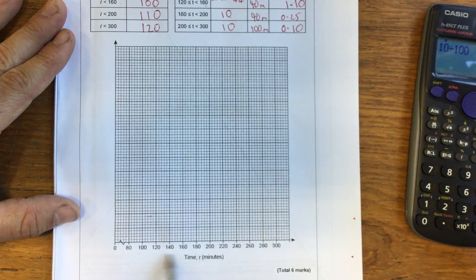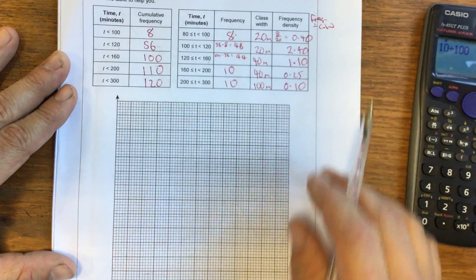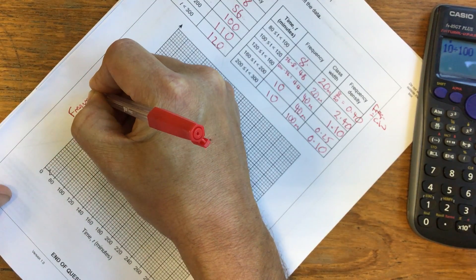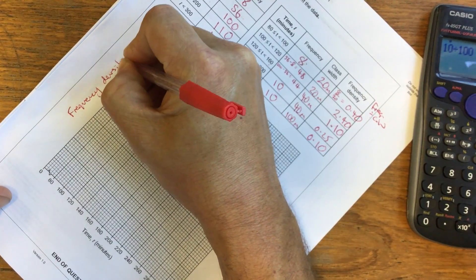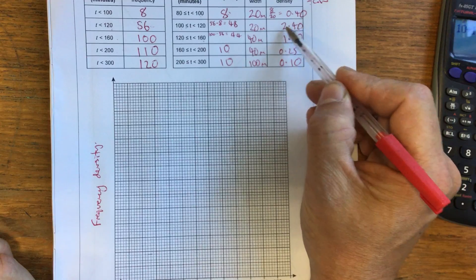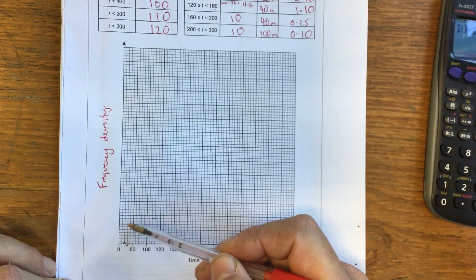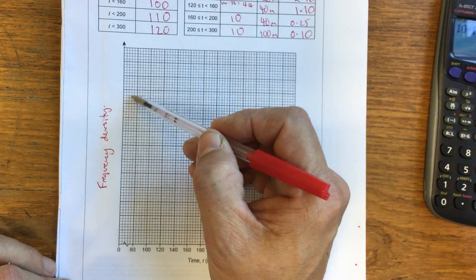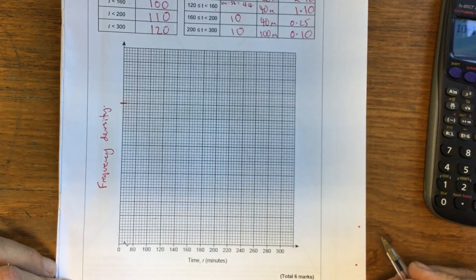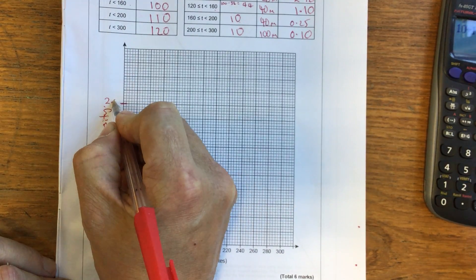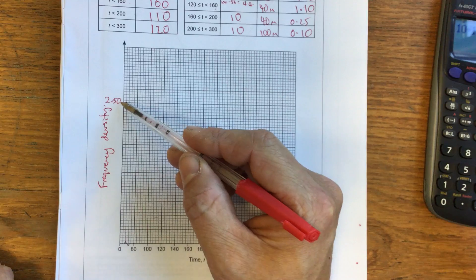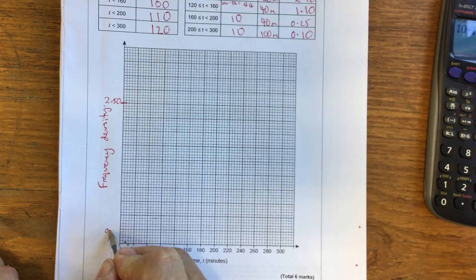So to draw my histogram, I'm going to have time on my horizontal axis. And I'm going to have frequency density on my vertical axis. Now the frequency density has to be from 0 up to the biggest number, which is 2.4. So let's see how many boxes we've got here. If we use 10 boxes and we say the 10th box is 2.50, I could then say, well, 2.50 divided by 10 would be 0.25. So each small box would be 0.25.